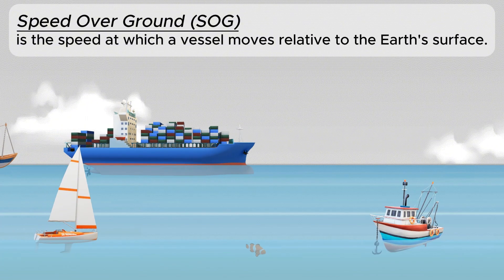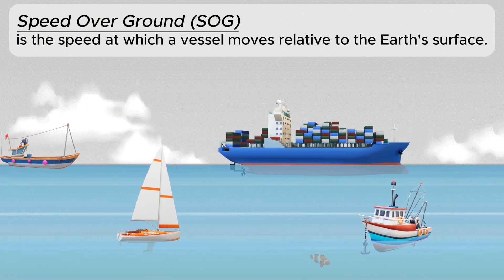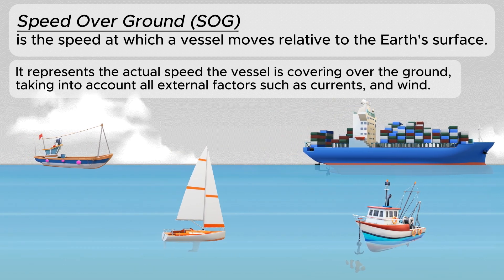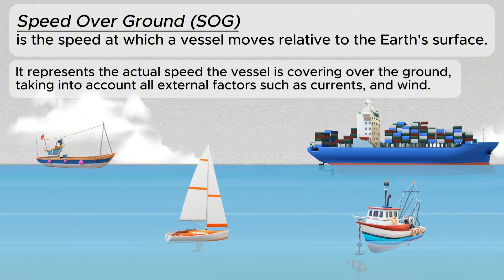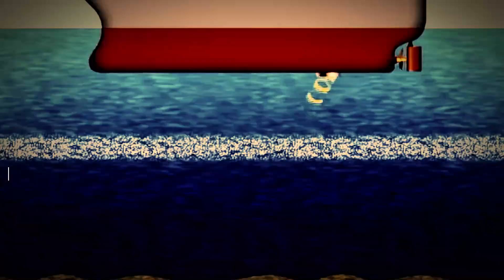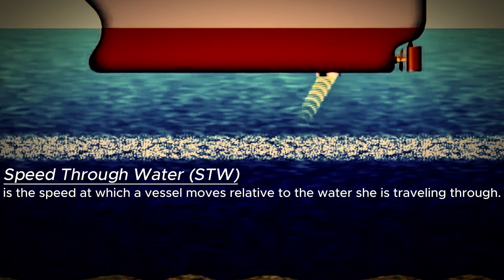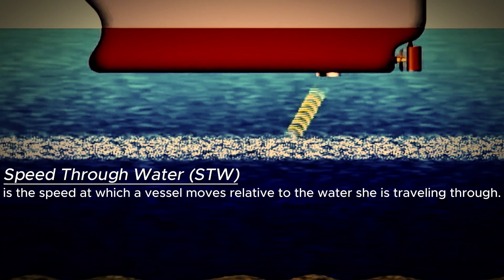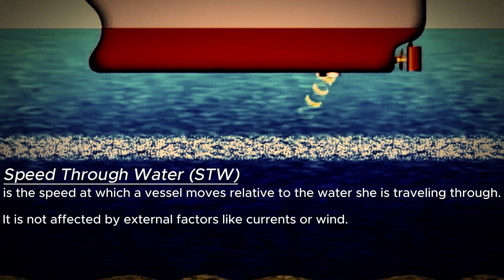Speed over the ground is the speed at which a vessel moves relative to the earth's surface. It represents the actual speed the vessel is covering over the ground, taking into account all external factors such as currents and wind. While speed through water is the speed at which a vessel moves relative to the water it is traveling through. It is not affected by external factors like currents or wind.